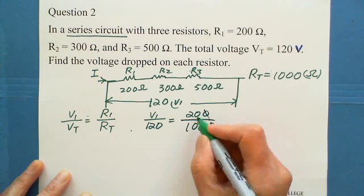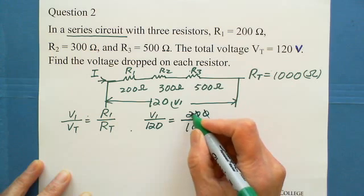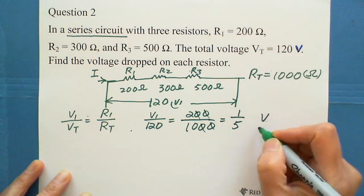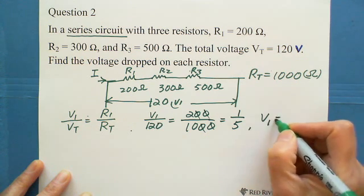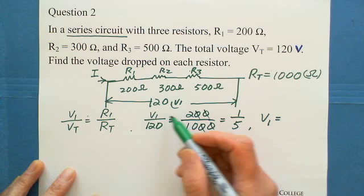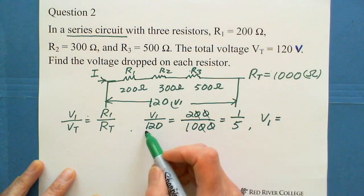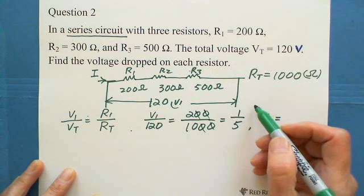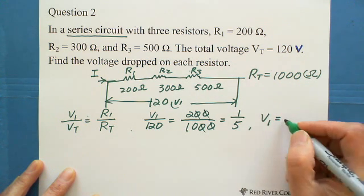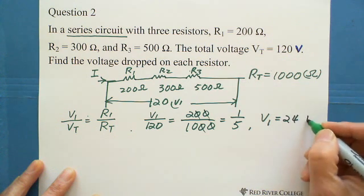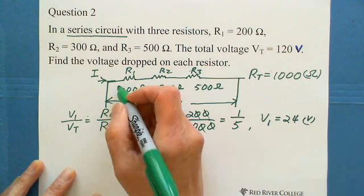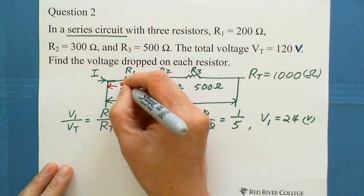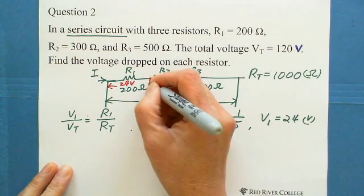So V1 over 120 equals 200 over 1,000. We cancel zeros to get 2 over 10, which simplifies to 1 over 5. Cross multiplication gives 5 times V1 equals 120, so V1 equals 120 divided by 5 equals 24 volts on the first resistor.